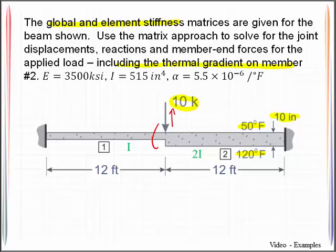The first thing we need to do is label the degrees of freedom. We'll do the unrestrained degrees of freedom first, degrees of freedom one and two, and then the restrained degrees of freedom three and four, five and six.